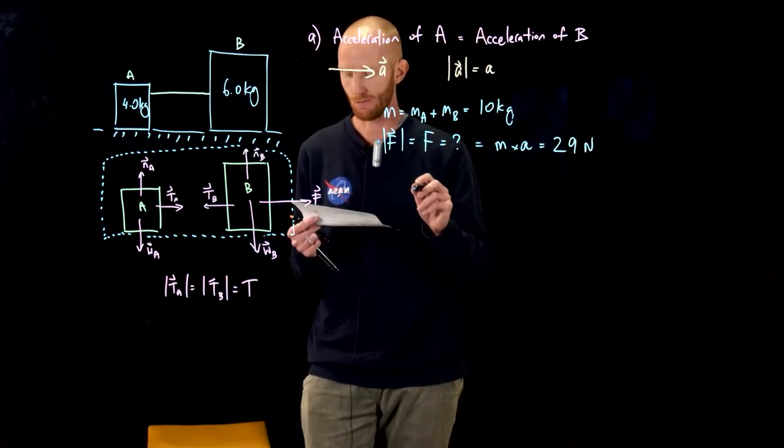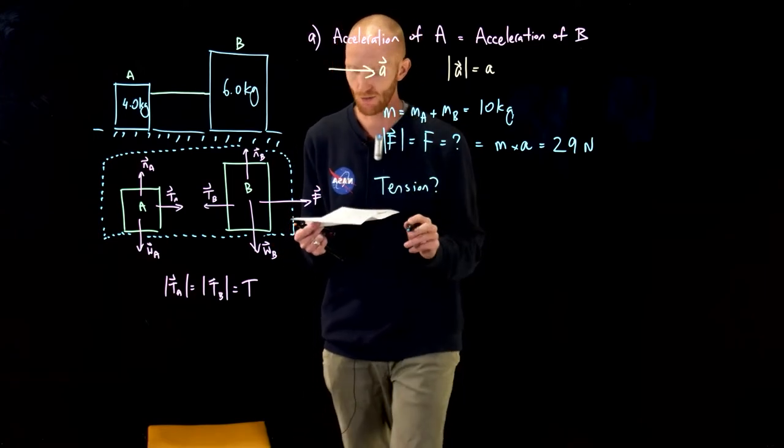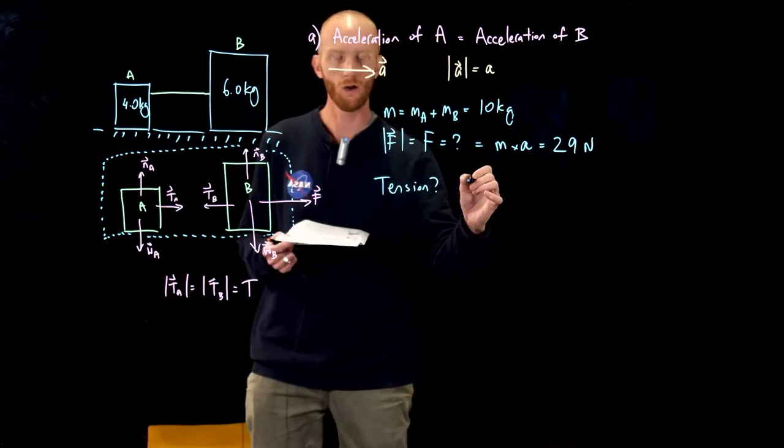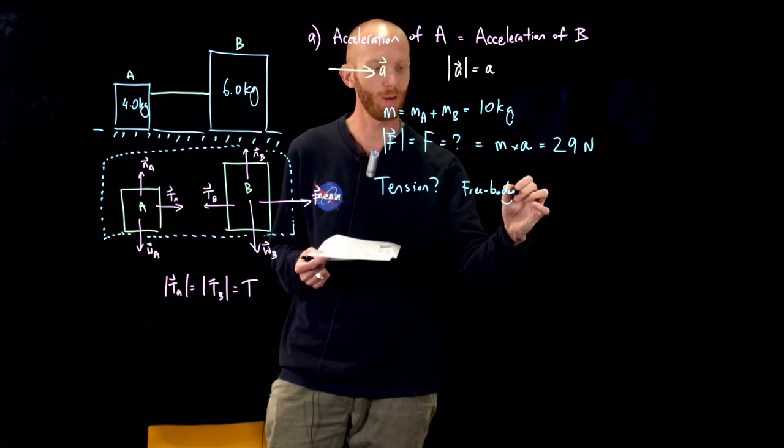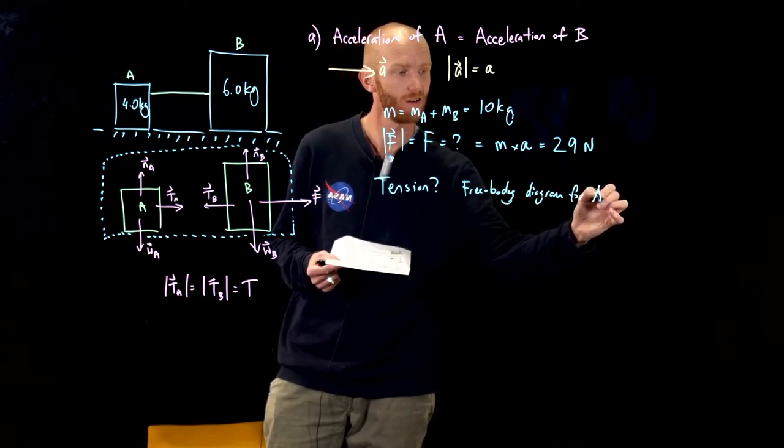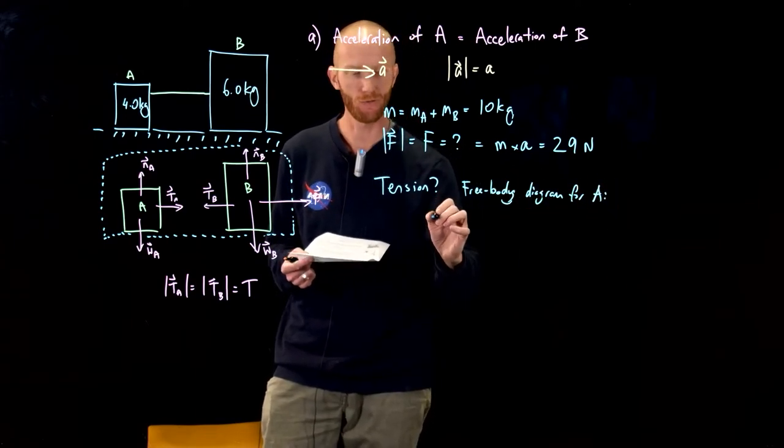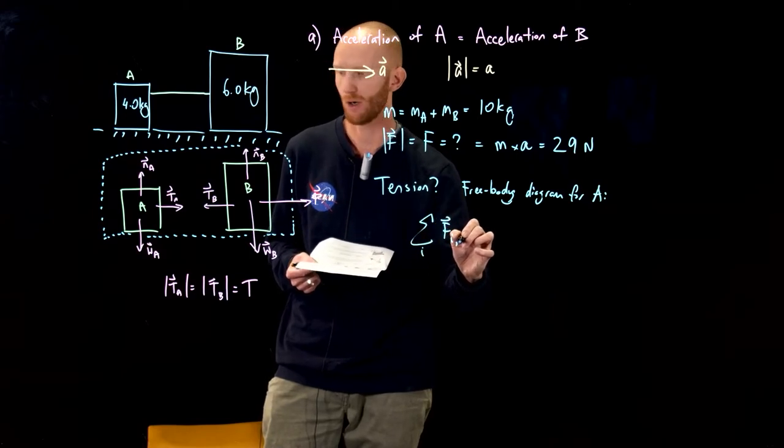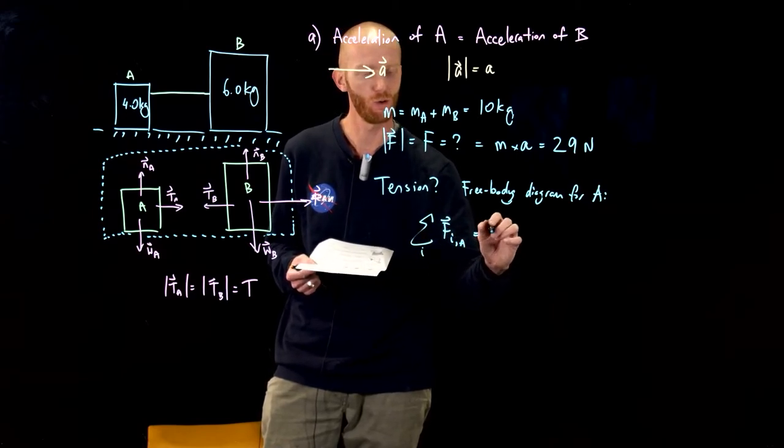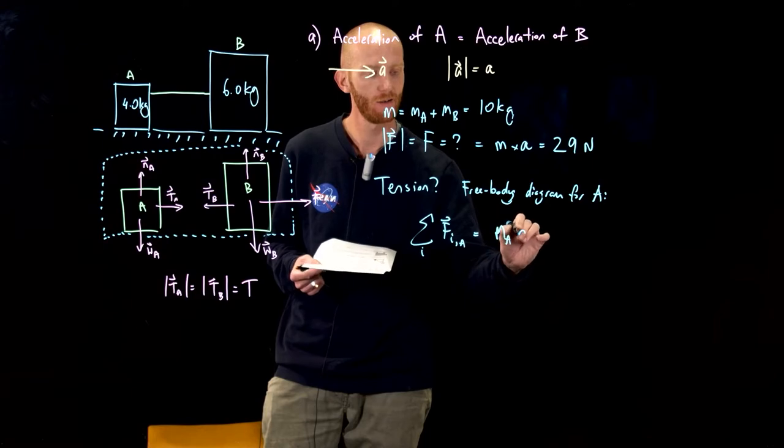And now we've got to figure out the tension. Well again, we can use Newton's second law and the free body diagram for box A to say that the sum of the forces acting on box A have to equal the mass of A times the acceleration.